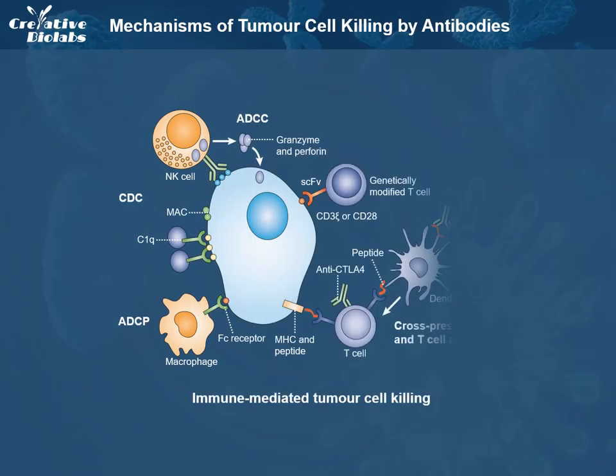Immune-mediated tumor cell killing can be carried out by the induction of phagocytosis, complement activation, antibody-dependent cellular cytotoxicity, genetically modified T cells being targeted to the tumor by single-chain variable fragment, T cells being activated by antibody-mediated cross-presentation of antigen to dendritic cells, and inhibition of T cell inhibitory receptors, such as cytotoxic T lymphocyte-associated antigen.